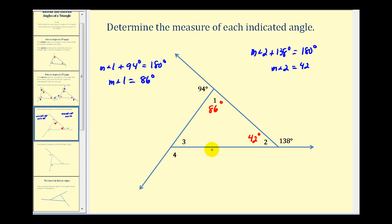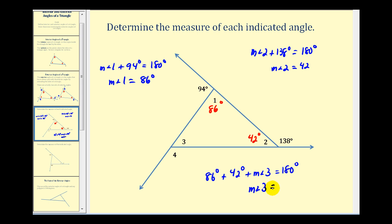Now looking at the interior angles, the measure of angle one plus the measure of angle two plus the measure of angle three must equal 180 degrees. Angle one is 86 degrees and angle two is 42 degrees, so 86 plus 42 is 128. Subtracting 128 from both sides gives us the measure of angle three, which is 52 degrees. Then since angle three and angle four form a linear pair, 180 minus 52 gives us the measure of angle four, which is 128 degrees.